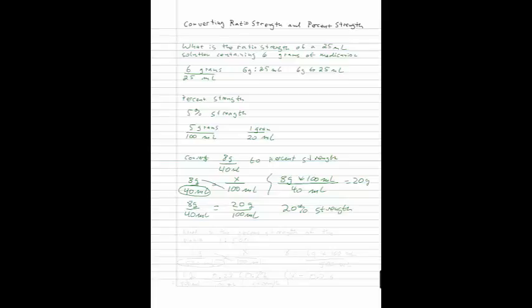The next question I'm going to ask is what is the percent strength of the ratio 1 to 500. So you want to go ahead and determine what that means. 1 to 500 means 1 gram in 500 milliliters. The question then becomes how many grams in 100 milliliters?